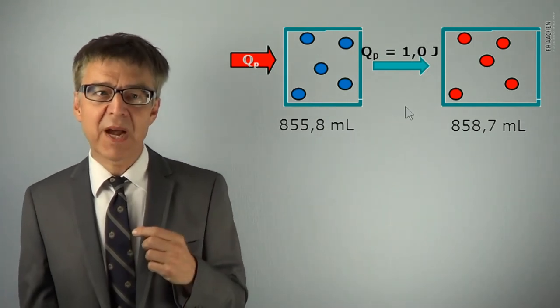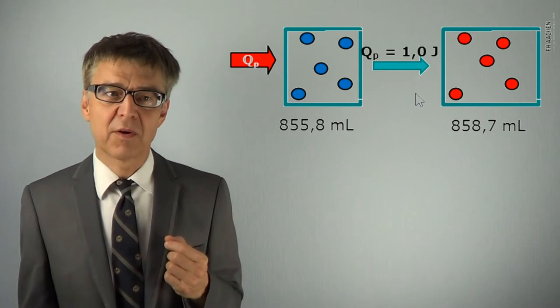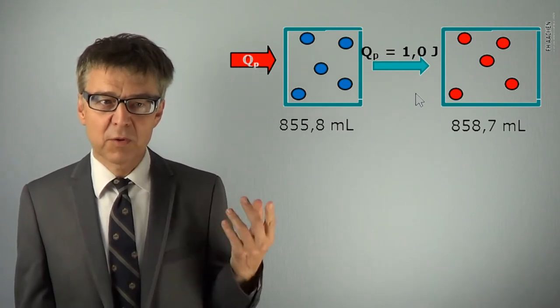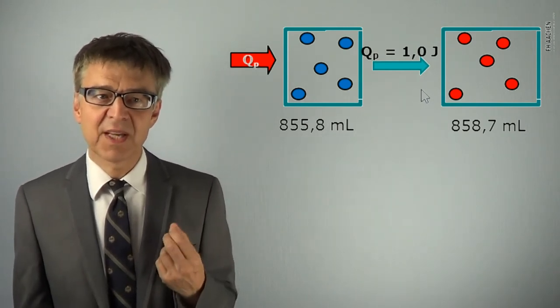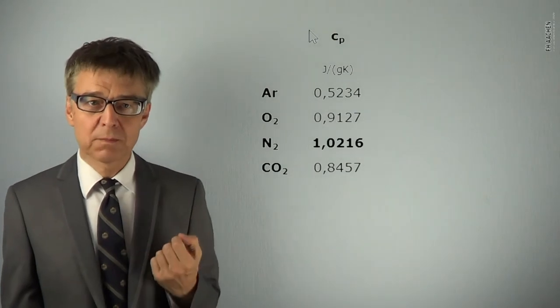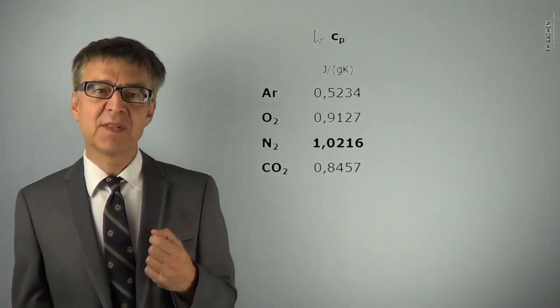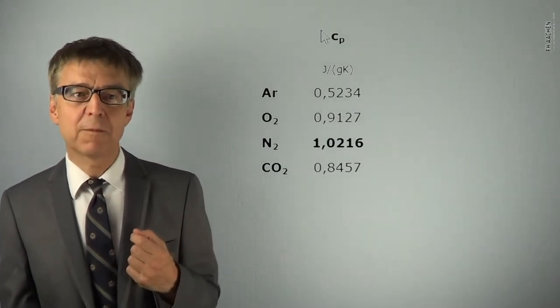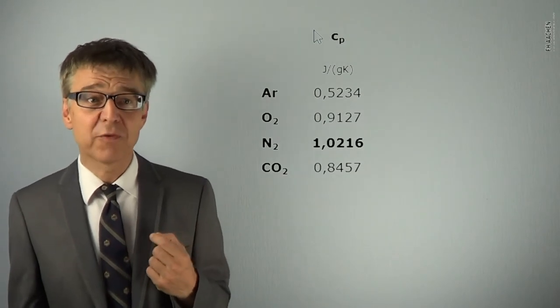Obviously, the isobaric heat is larger than the isochoric heat. So, isochoric and isobaric heat capacities are different, too. Accordingly, the heat capacities carry the subscripts p and v. The difference between C sub p and C sub v is particularly large for gases.